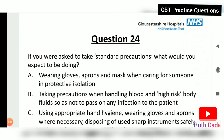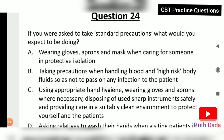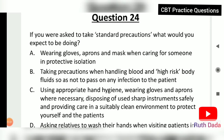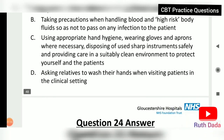Question 24: If asked to take standard precautions, what would you expect to be doing? You would be wearing gloves, aprons, and masks when caring for someone in protective isolation; taking precautions when handling blood and high-risk body fluids; using appropriate hand hygiene; wearing gloves and aprons where necessary; disposing of sharps safely; providing care in a clean environment; and asking relatives to wash their hands when visiting.